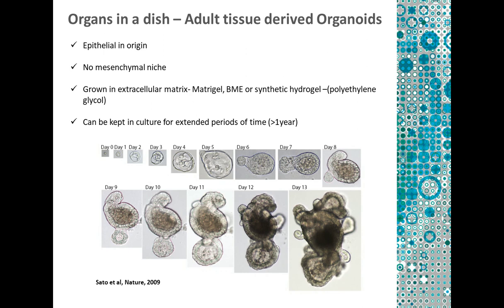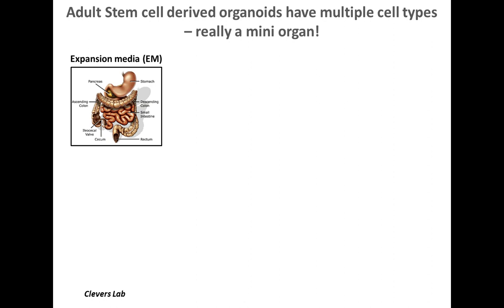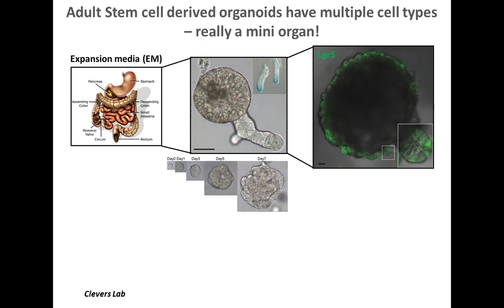What you just saw is how the organoids are grown and expanded in culture. It is also important to know that the organoids are really like a mini-organ. When they are grown in expansion media — we call them EM — these essentially have stem cell-like characteristics, and that is why they expand in culture. If you want to really differentiate them into a certain cell type, you have to put them in differentiation media, for example by withdrawing Wnt in the case of intestinal stem cell organoids so that they become more differentiated. When you put these organoids in differentiation media, they form different cell types — enterocytes marked by alkaline phosphatase, mucin-producing goblet cells, and so on.